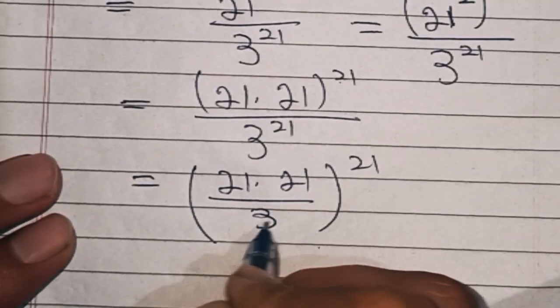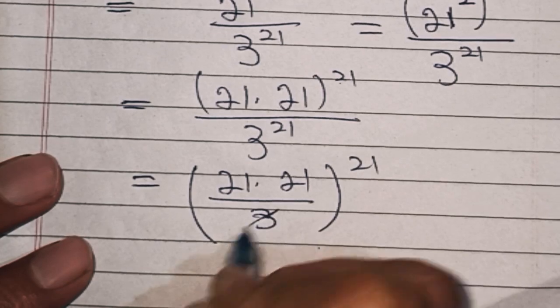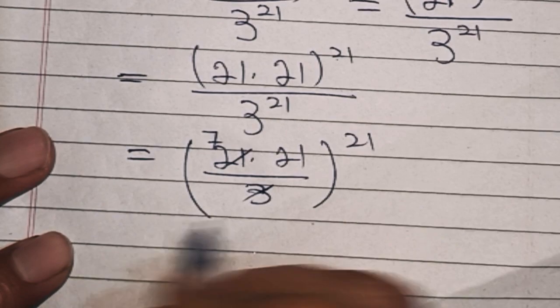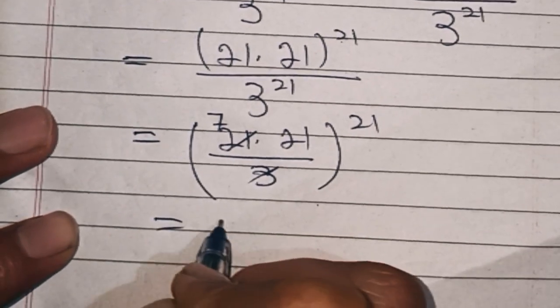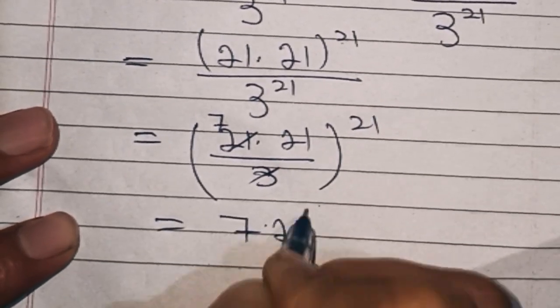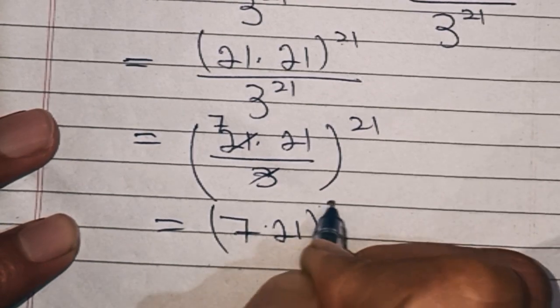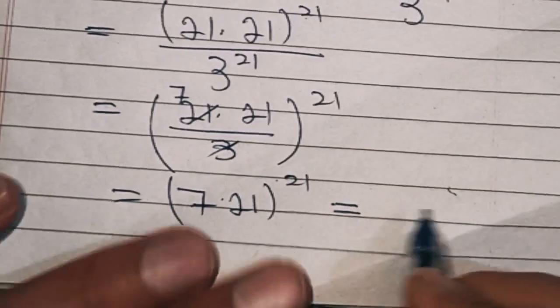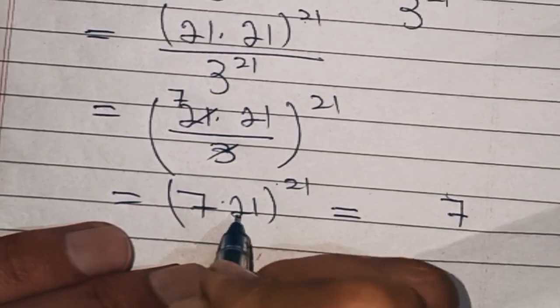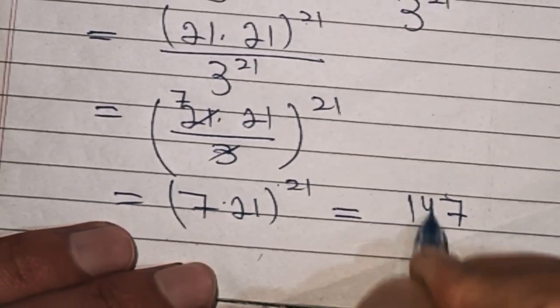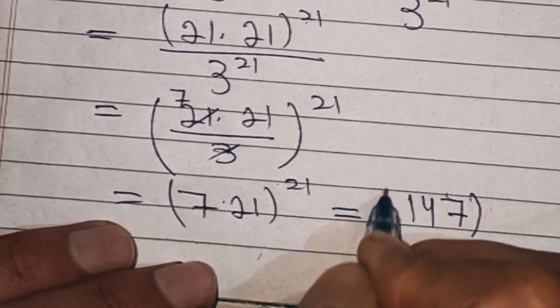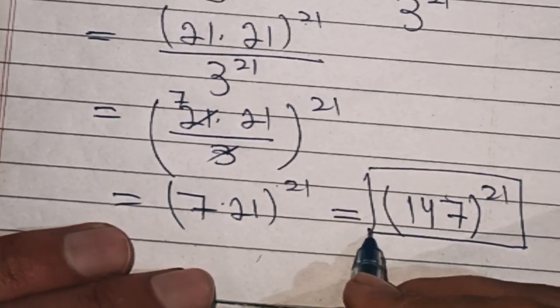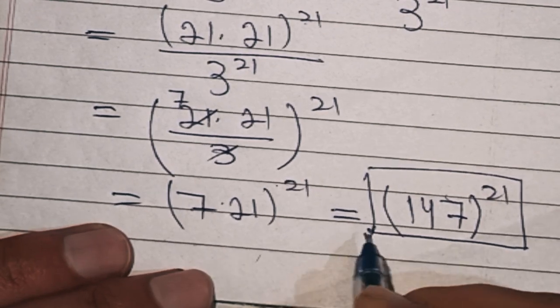power 21. Now this is 3 times 7 equals 21, so this is equal to 7 times 21 power 21, which is equal to, 7 times 21 is 147, then bracket power 21. So this is our final answer. Keep supporting us and thanks for watching.